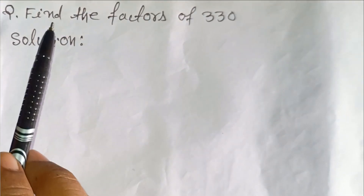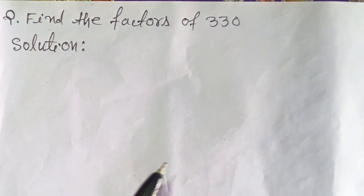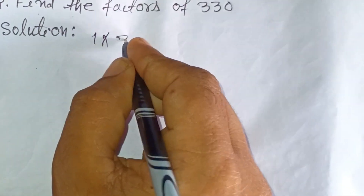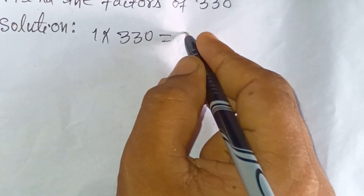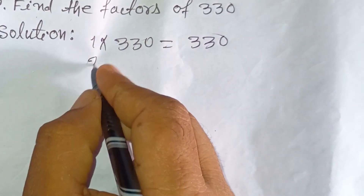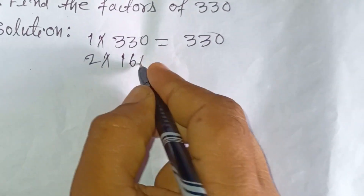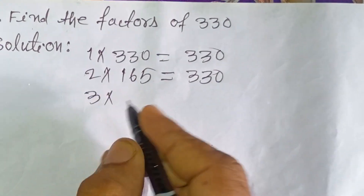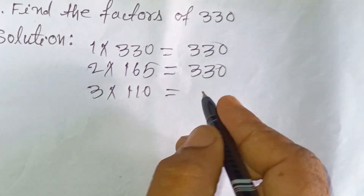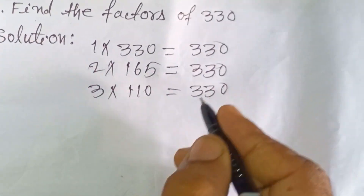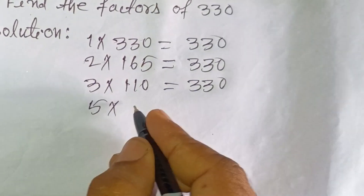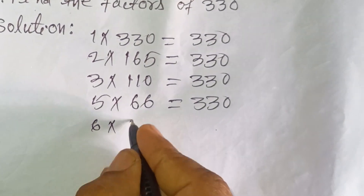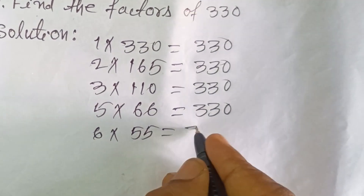Find the factors of 330. 1 × 330 = 330, 2 × 165 = 330, 3 × 110 = 330, 5 × 66 = 330, 6 × 55 = 330.